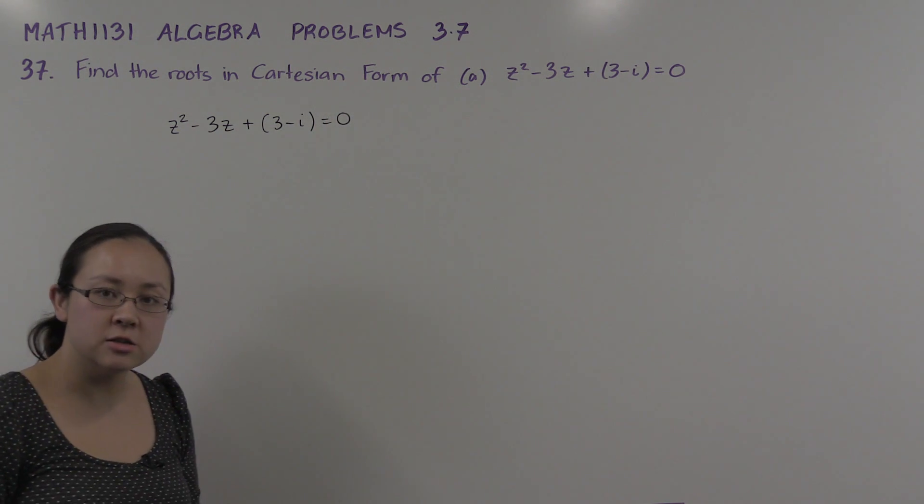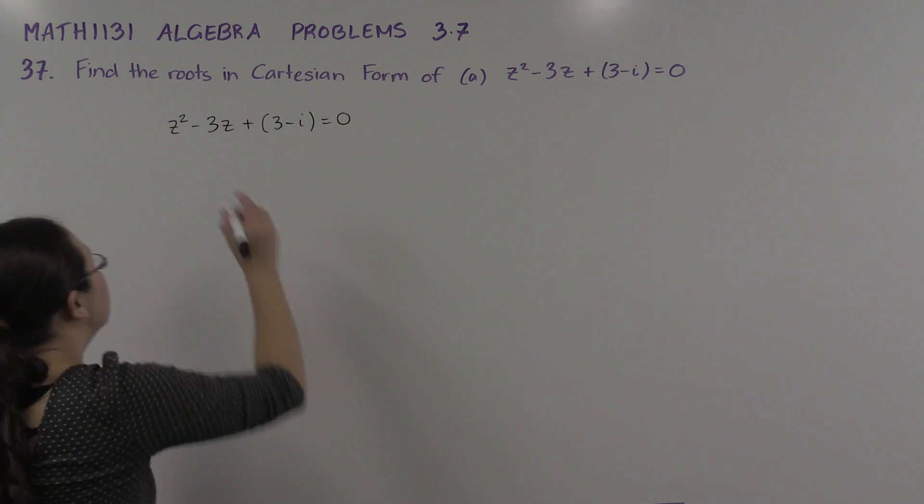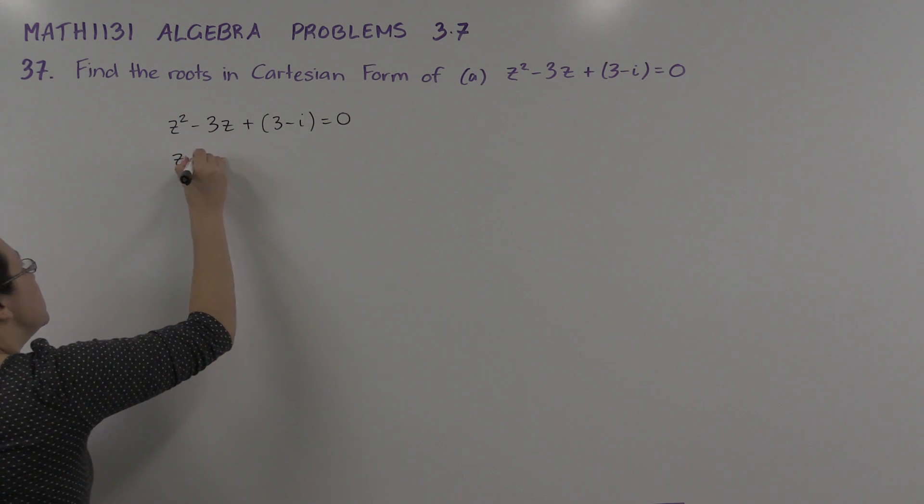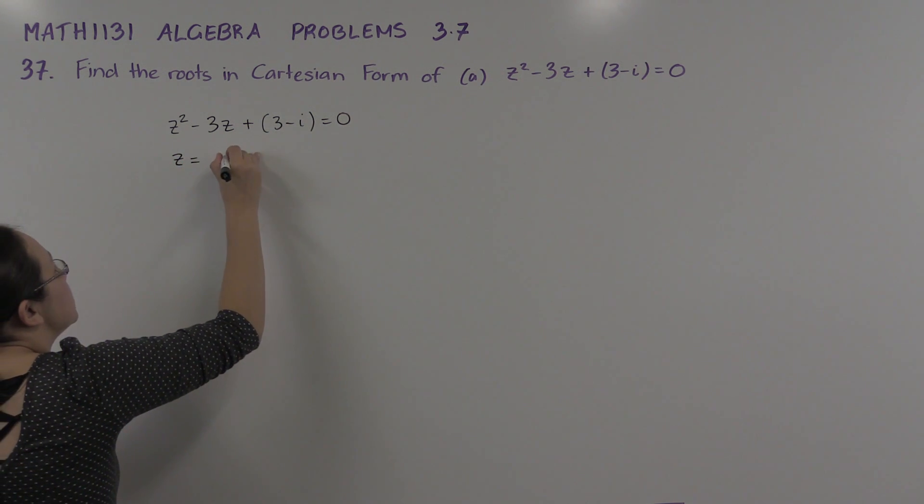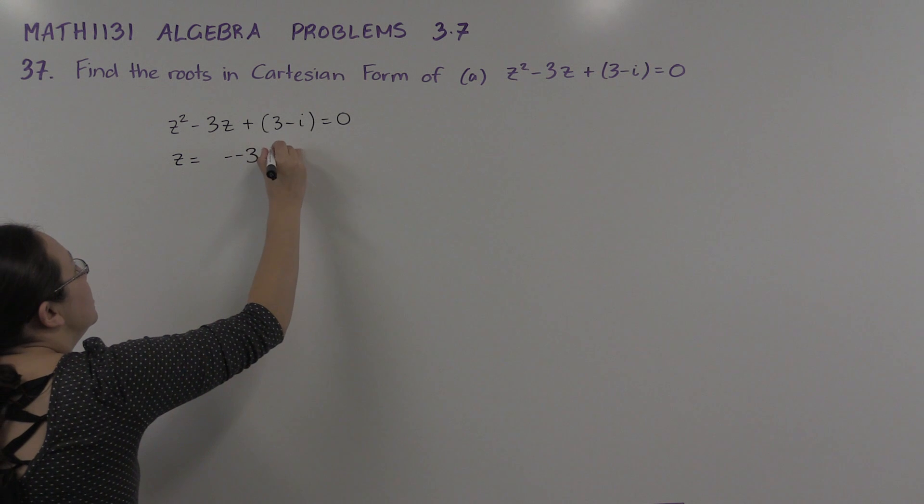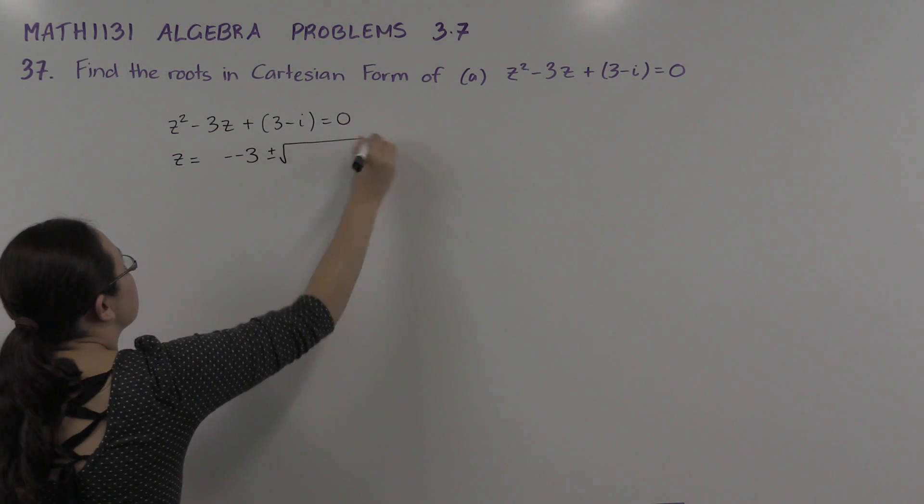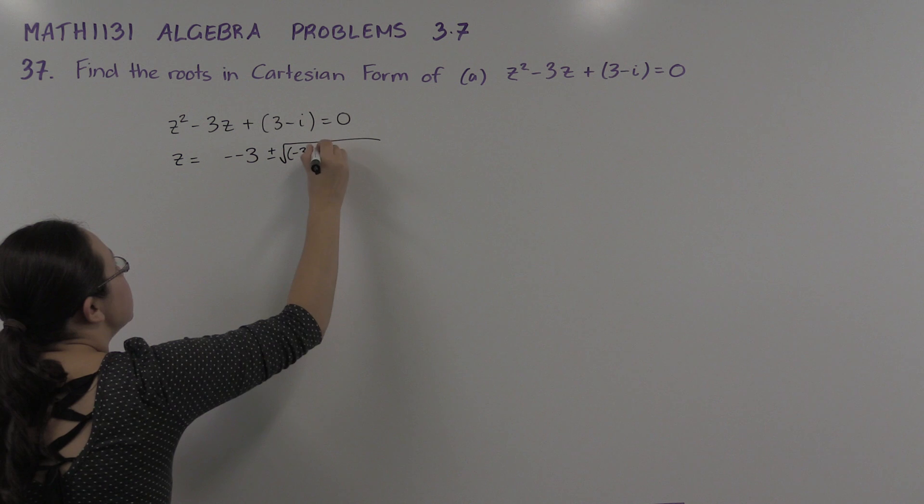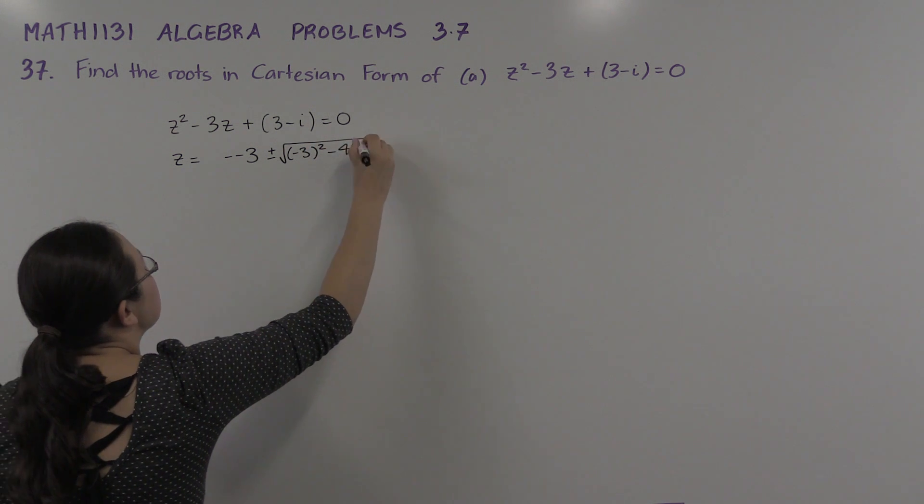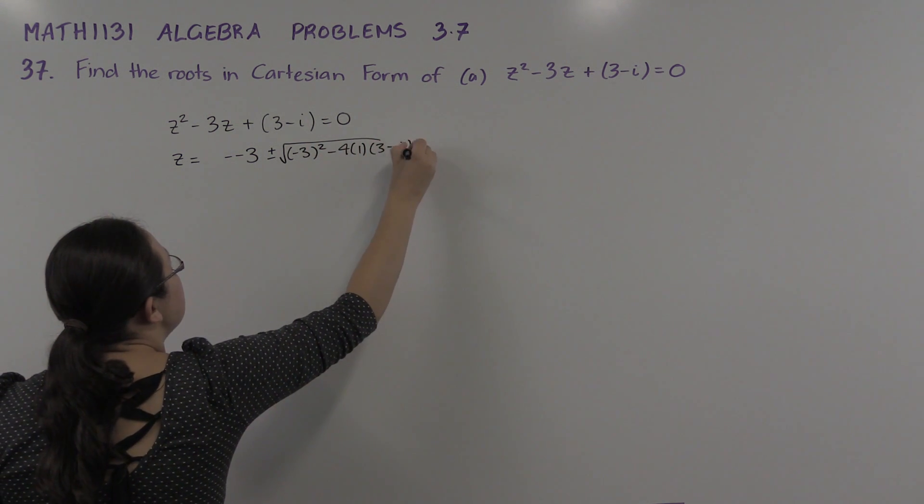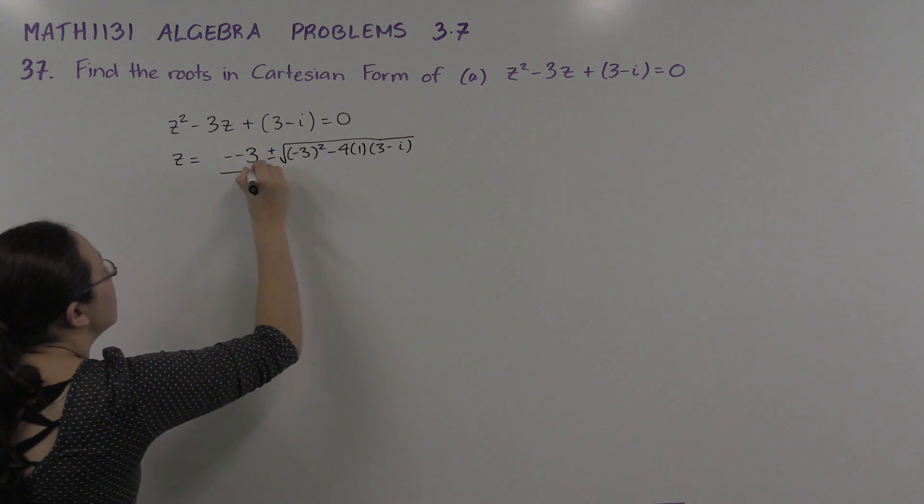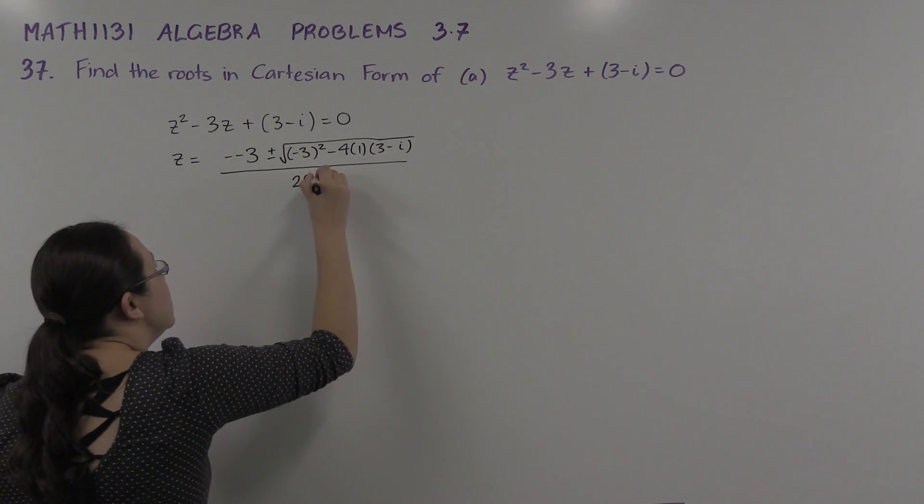This is just a quadratic equation so we can use the quadratic formula to find this solution. So z equals -b ± √(b² - 4ac) all over 2a.